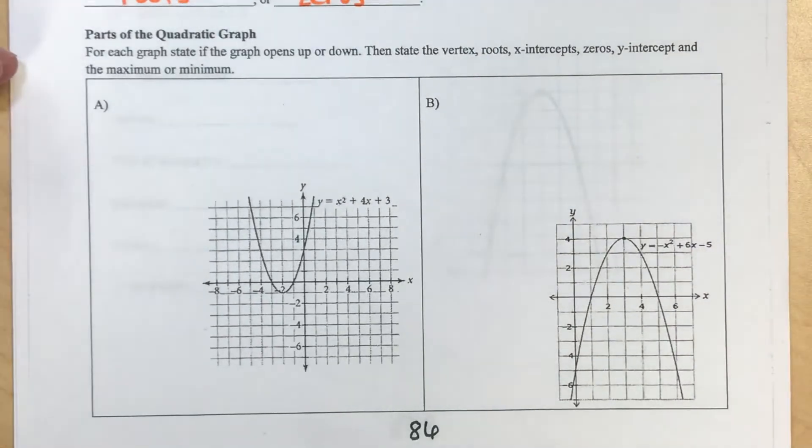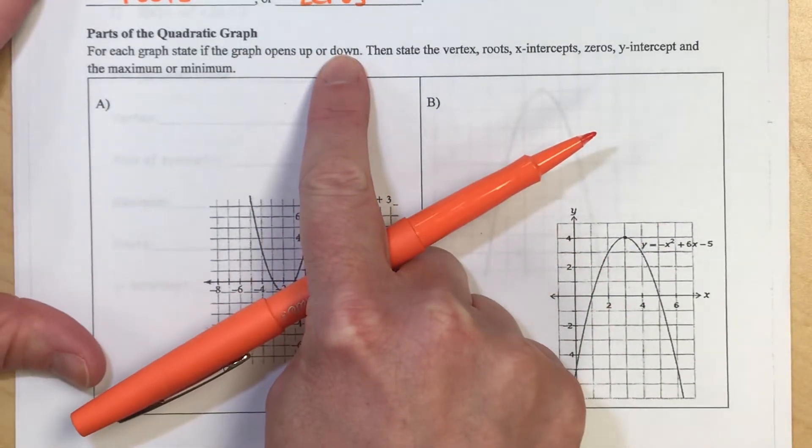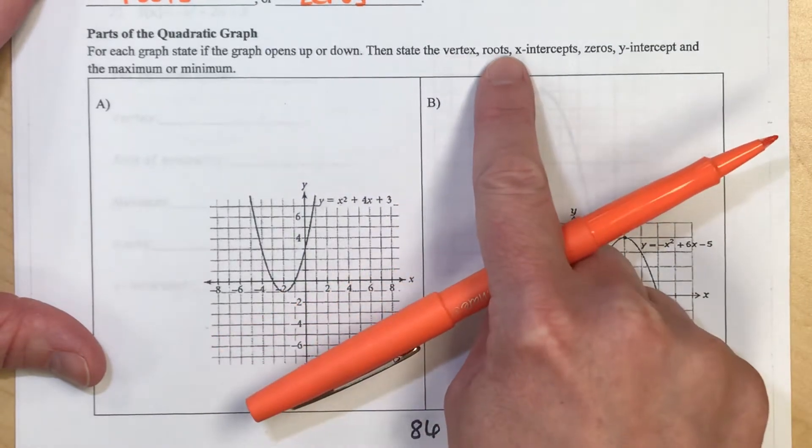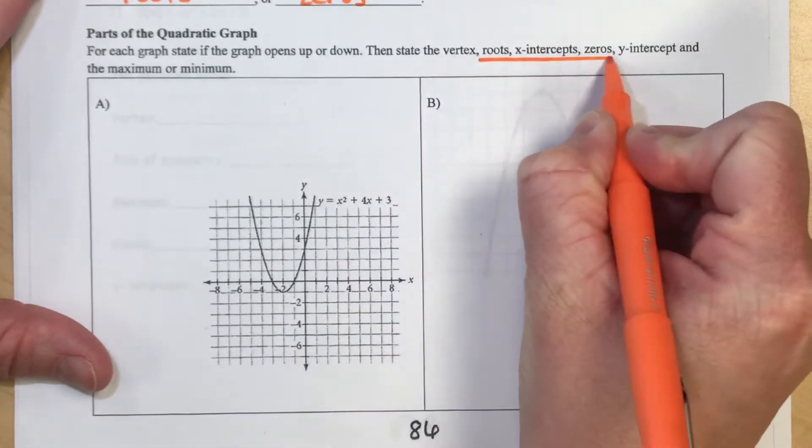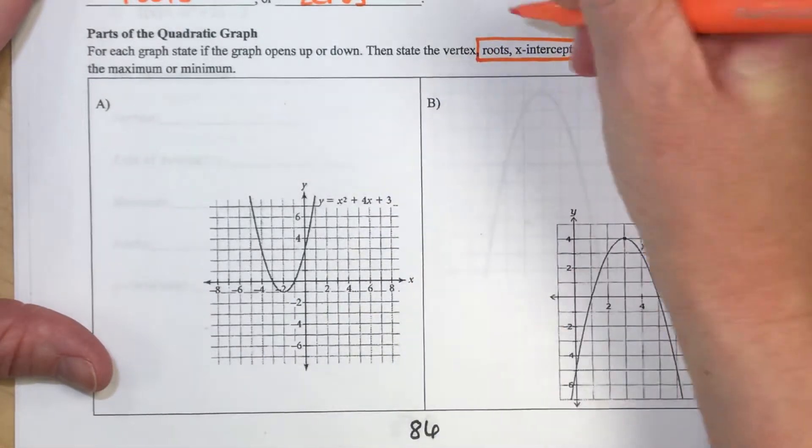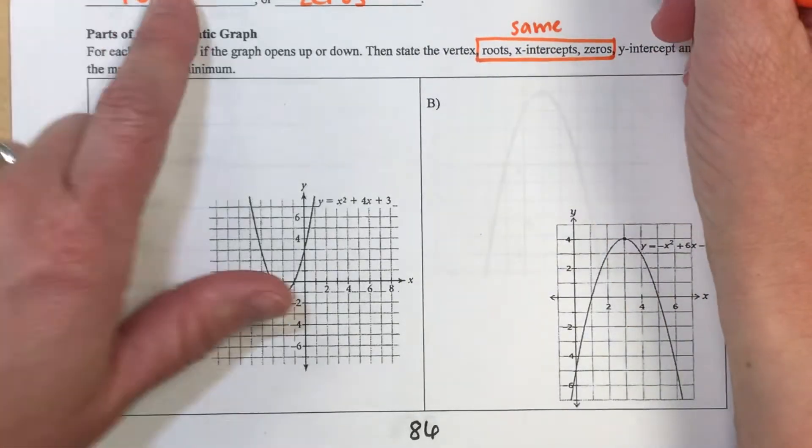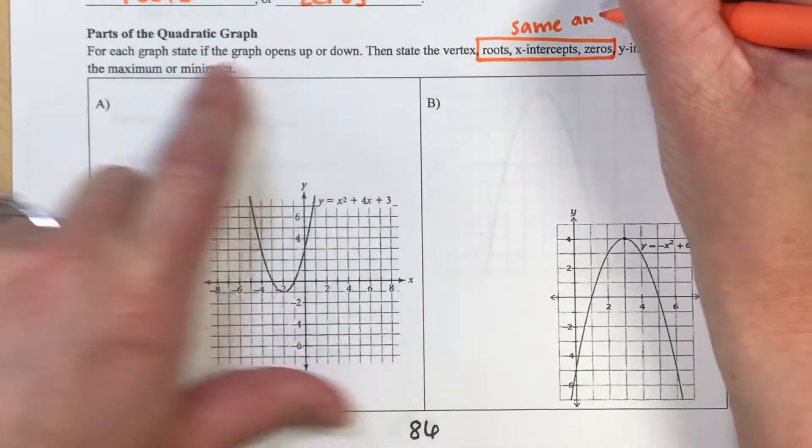So I'm going to do four examples of parts of the quadratic graph and for each graph what we're going to do is first state if it opens up or down and then we're going to state the vertex, what that point will be, the roots, x-intercepts, zeros. These three are actually the same answer so I want to make sure because they refer to the same thing here, so solutions are also called x-intercepts, roots, or zeros.